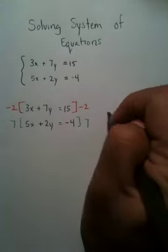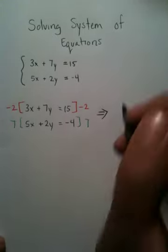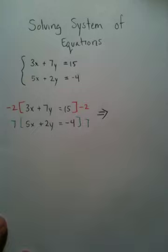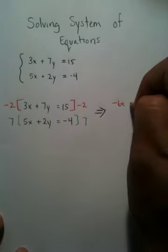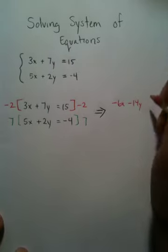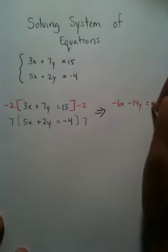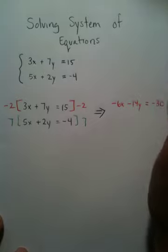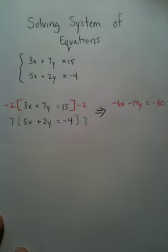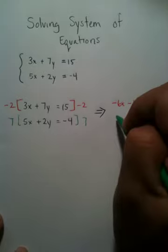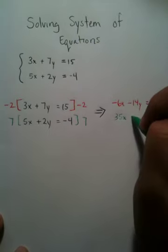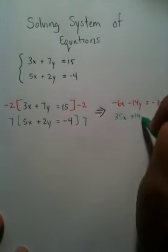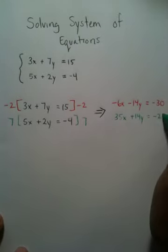Because my problem will be rewritten in a way that allows me to eliminate my answers, such as negative 6x, negative 14y, and that will equal negative 30. Down below I've got 35x, positive 14y, and that's going to equal negative 28.